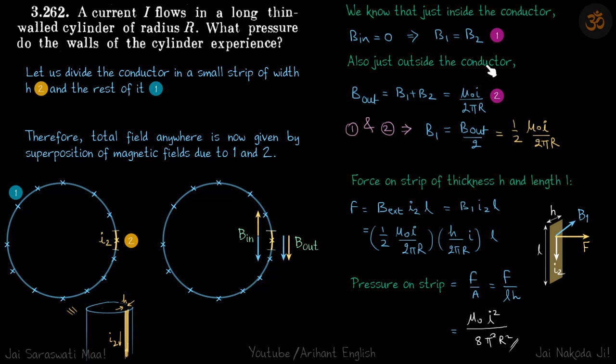By solving these three equations, we get B₁ = μ₀I/(4πr). So half of the field outside is because of the small strip. We're just talking about just outside the surface, not very far.